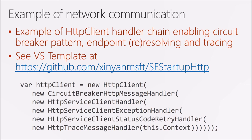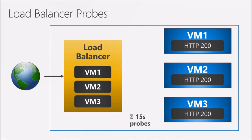Another thing to consider is load balancer probes — something people often set up and forget. Here's how it works: with three virtual machines (VM1, VM2, VM3), the load balancer probes all three every 15 seconds. When the load balancer sends a probe and they all return HTTP 200, it tells the load balancer all VMs are fine and traffic can be directed to any of them.